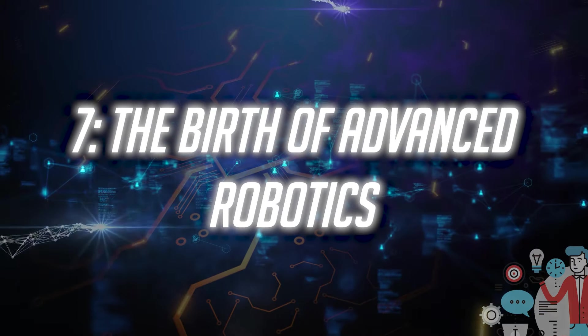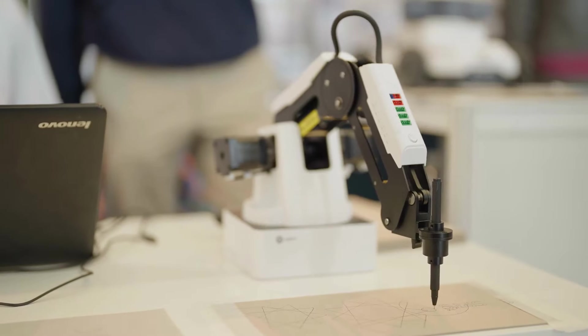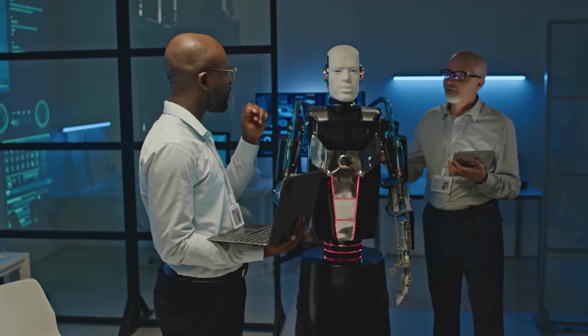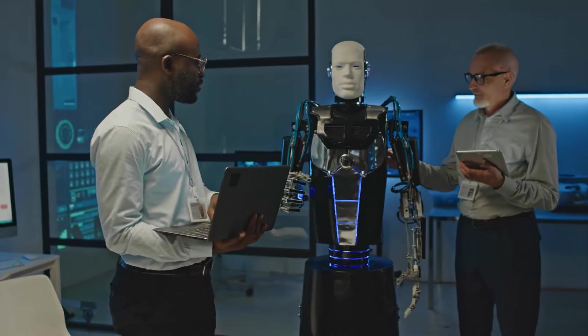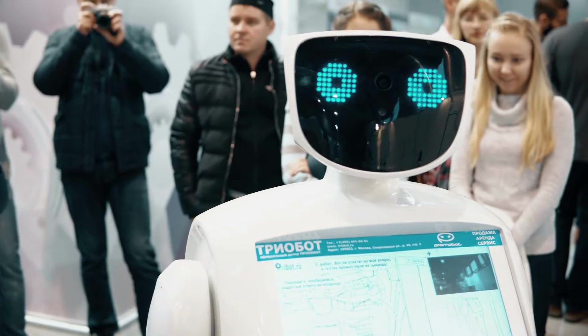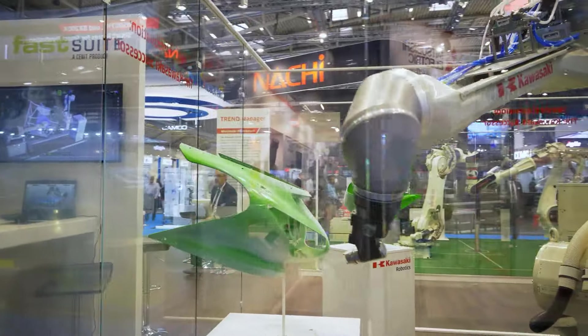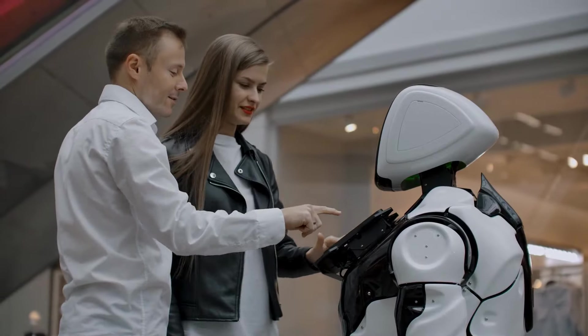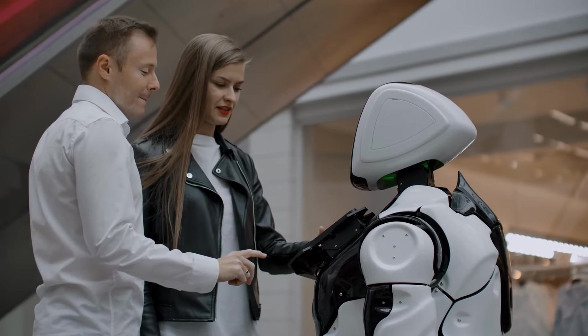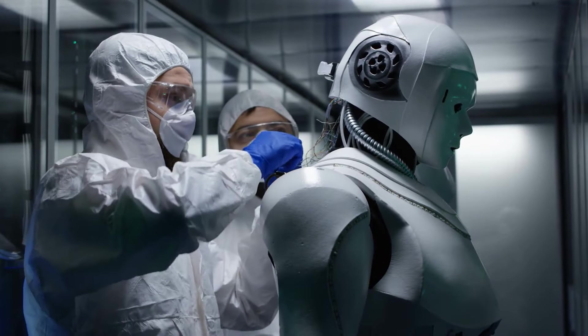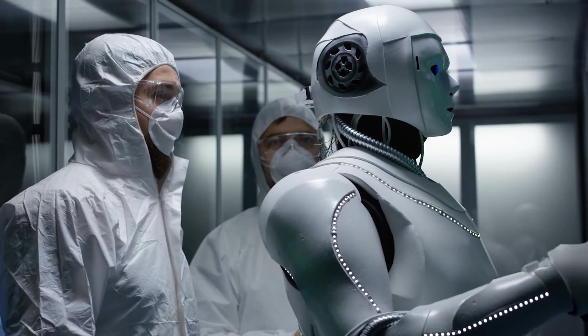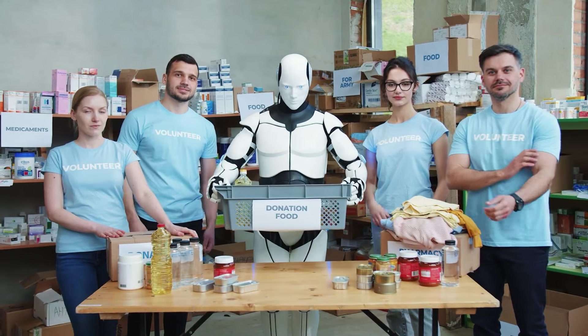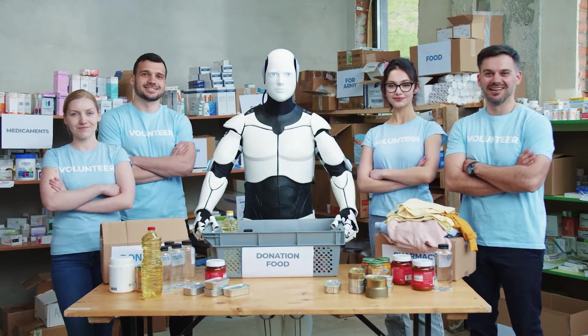Number seven, the birth of advanced robotics. Soon, advanced robotics is set to revolutionize the way we live and work. These sophisticated machines won't just be limited to factory floors, they'll seamlessly integrate into our daily lives. Imagine your household chores becoming a breeze as robots with advanced dexterity handle tasks from cleaning to cooking. The precision and efficiency of these robots will redefine our understanding of automation. Beyond homes, advanced robotics will play a crucial role in fields like healthcare. Surgical robots with unparalleled precision will be able to aid surgeons in complex procedures, reducing human error, and enhancing patient outcomes. This collaboration between human expertise and robotic precision will usher in a new era of medical advancements.